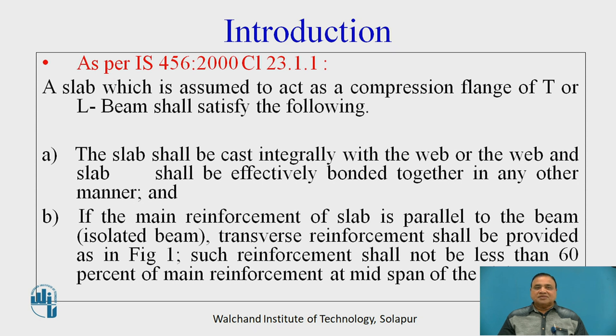The slab shall be cast integrally with the web, or the web and the slab shall be effectively bonded together in any other manner. And if the main reinforcement of the slab is parallel to the beam, that is in case of isolated beams, transverse reinforcement shall be provided as shown in figure number 1. Such reinforcement shall not be less than 60% of the main reinforcement at mid-span.